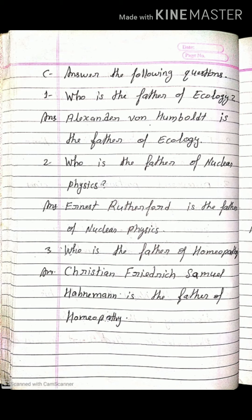Next: who is the father of homeopathy? Answer is Christian Friedrich Samuel Hahnemann. Next: who discovered the theory of gravity and the three laws of motion? Answer is Sir Isaac Newton.